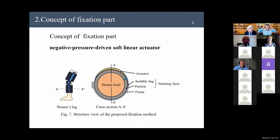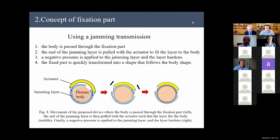Figure 7 is structure build of proposed fixation method. This actuator is divided into a frame part, jamming layer part, and actuator part. The main difference from the previous research is that the curve is changing to an actuator that contracts under negative pressure. Figure 8 is the movement of the proposed method. First, your body passes through the device, and secondly, the end of the jamming layer is pulled with the actuator shrinking, and the layer fits the body. Finally, negative pressure is applied to the jamming layer and it hardens.